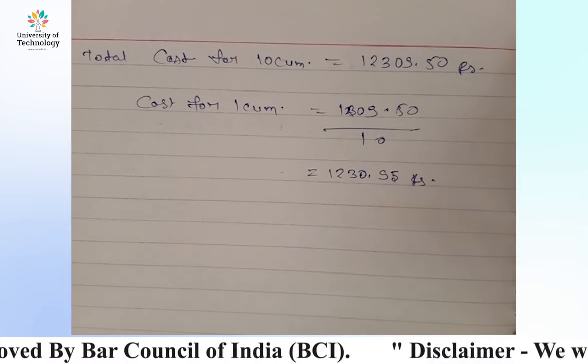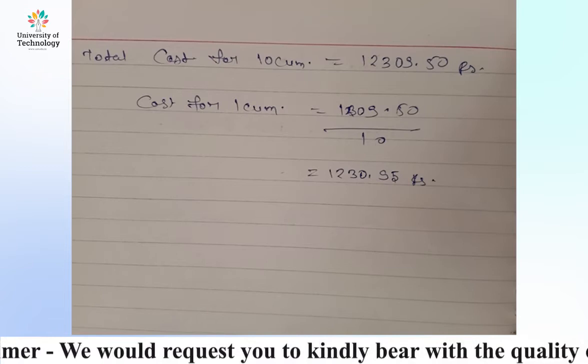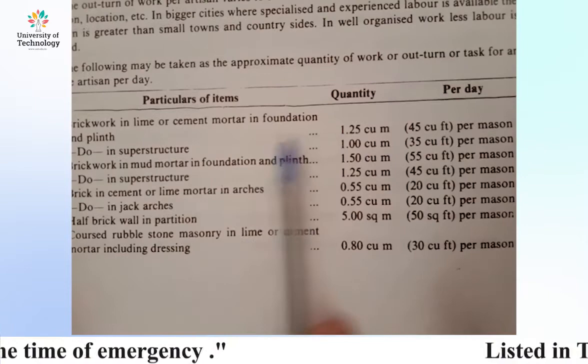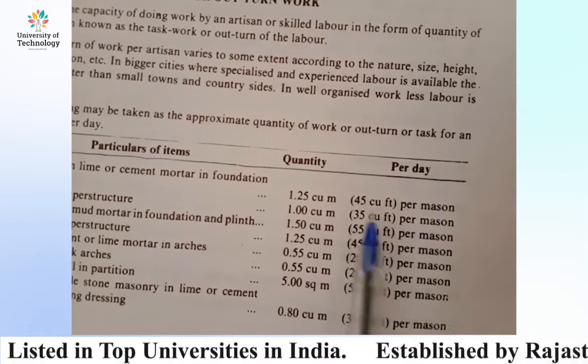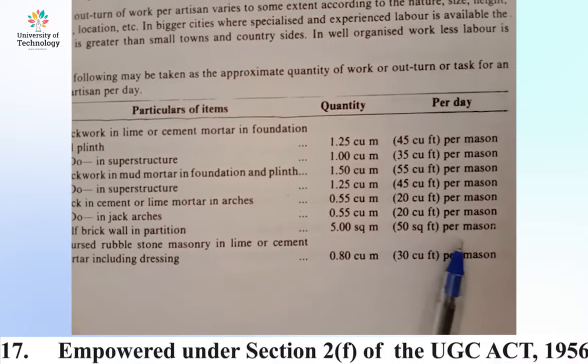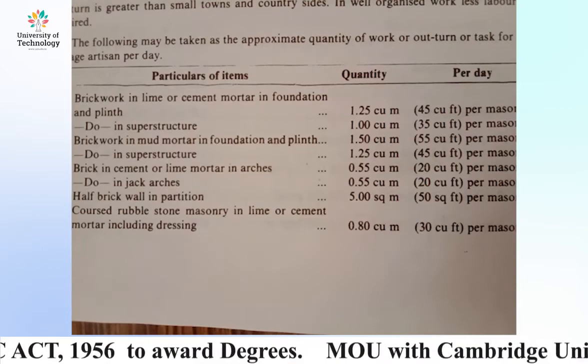Now let's look at the rate schedule and other tables. Looking at the labor rate table for brick wall at 1.25 — examining the quantity, one mason can make 45 cubic feet of brick wall. You need to account for the employment set for the superstructure, and all these values form the labor rate analysis.